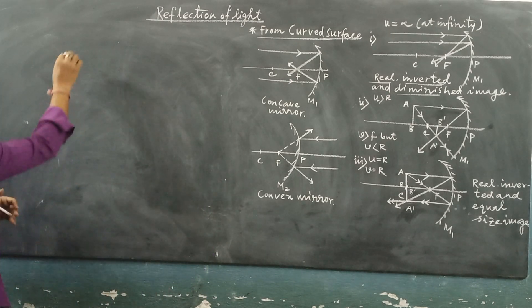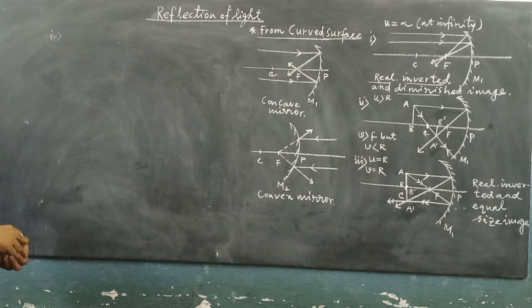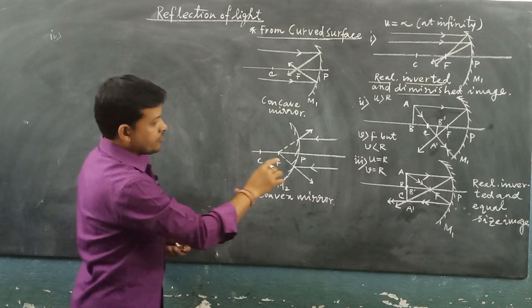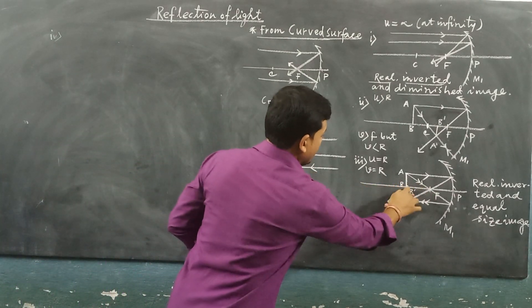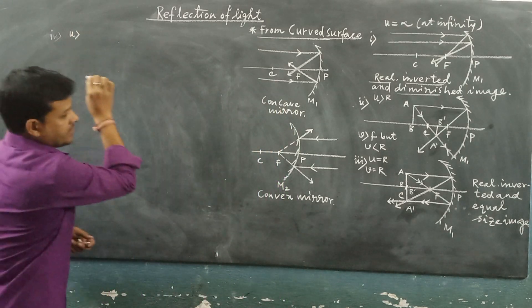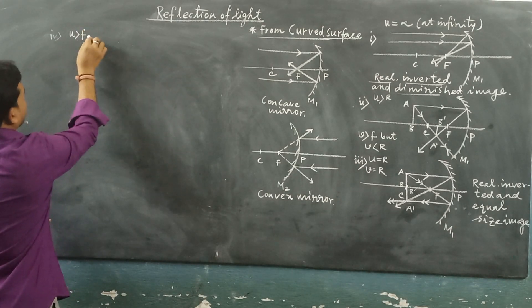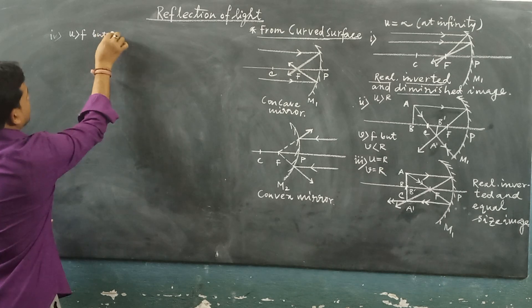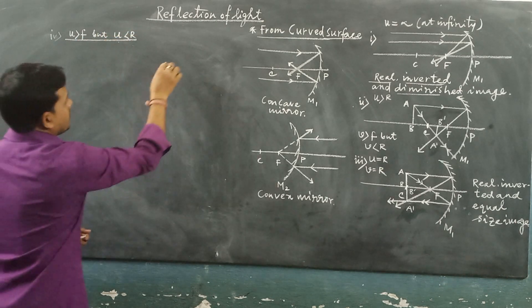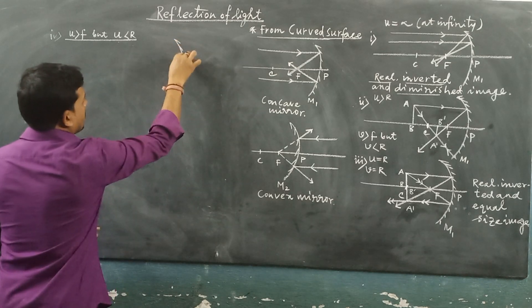Now let us consider ray diagram number 4: when the object is in between C and F — that is, U is greater than the focal length of the concave mirror but U is less than R. In between F and C, what will be the characteristics of the image formed by a concave mirror?